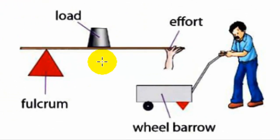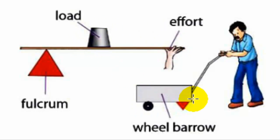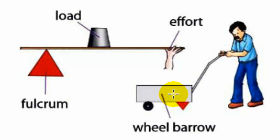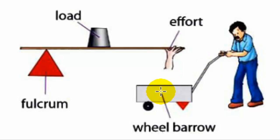In the figure, we can see the load is between the fulcrum and the effort, confirming it is a second class lever. In a wheelbarrow, effort is applied at the handles, the load is placed in the box, and the wheel acts as the fulcrum — so the wheelbarrow is an example of a second class lever.